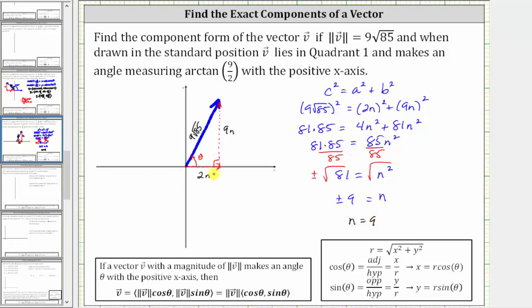So if n equals 9, 2n equals 18, and 9n equals 81. Which means we now know the x component is 18 and the y component is 81.